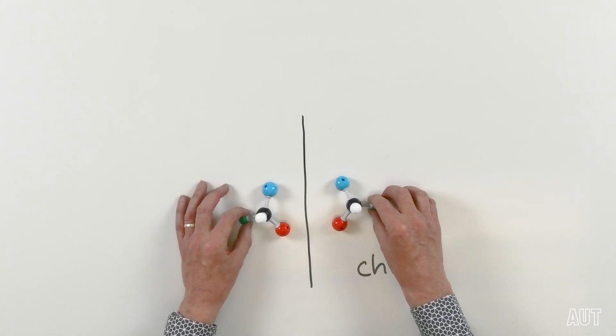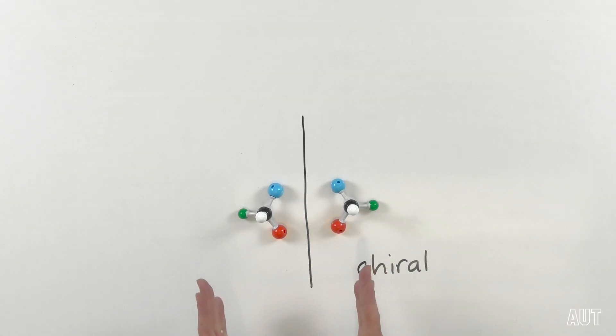Chemically, these behave pretty much identically, unless they're in the presence of other chiral molecules, in which case they do behave differently. But most of the time they're going to behave similarly. Physically, these are pretty much identical. When talking about other isomers — constitutional isomers, diastereoisomers — each of those have very different physical properties: different boiling points, melting points, densities. But these enantiomers have the same boiling point, the same melting point, the same density. All of their physical properties are the same, with the exception of one really important thing.